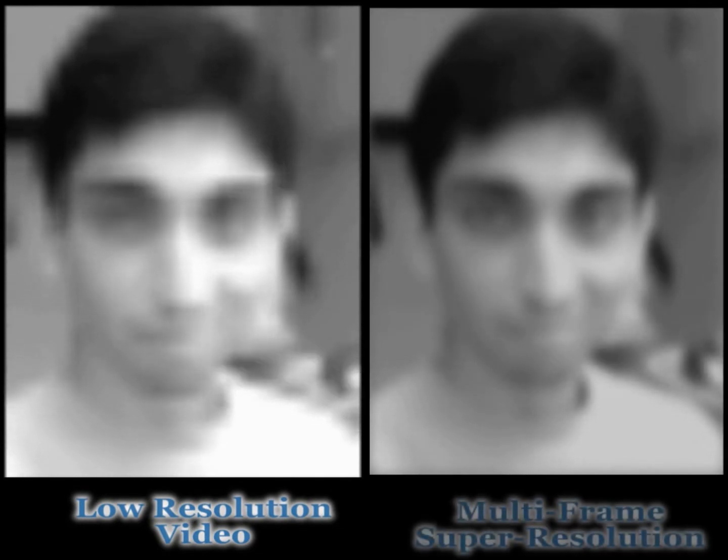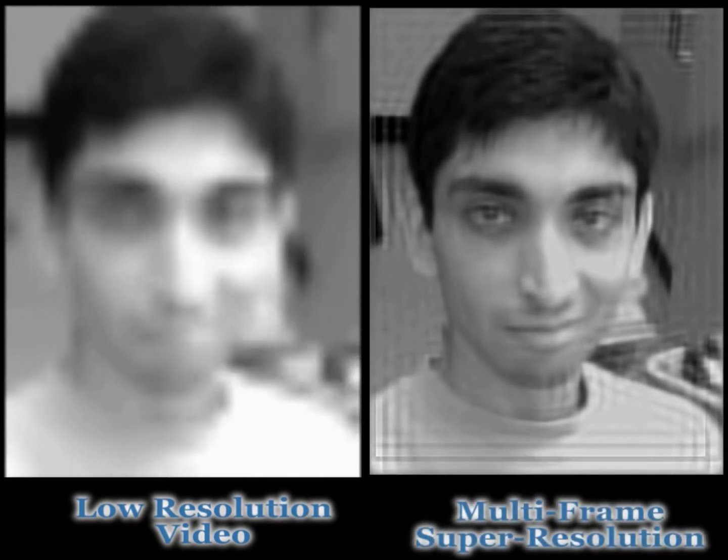Pixel super resolution is a digital processing algorithm which allows using multiple low resolution images, like video frames from a surveillance camera, to create a single high resolution image like the one you see on the right here.